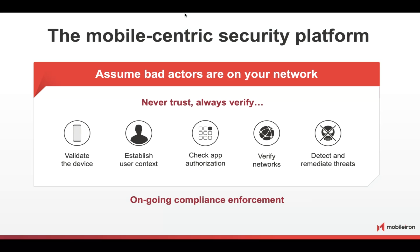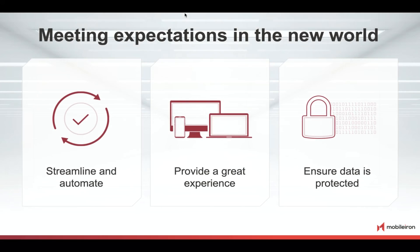A mobile-centric security platform needs to assume that bad actors are already on your network. When you open an app, a very fast background process validates your device, establishes user context, checks app authorization, verifies the network, and even detects and remediates threats — all in milliseconds. If the phone detects the device is not secure, it cannot open that app. Ongoing compliance enforcement ensures that as soon as a device is not compliant, it cannot access any company data.